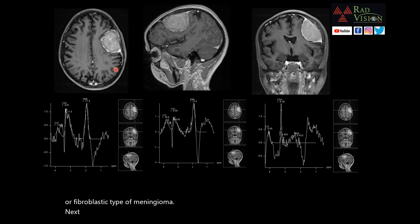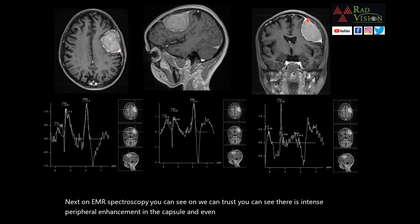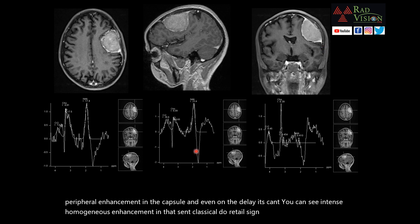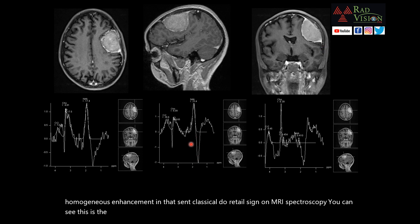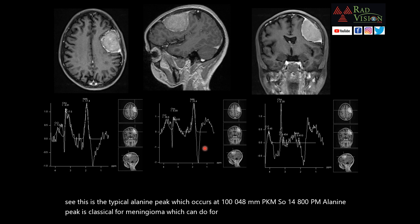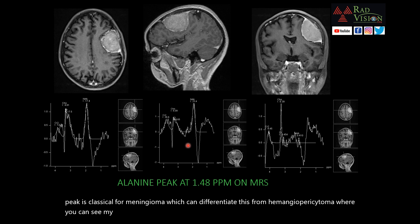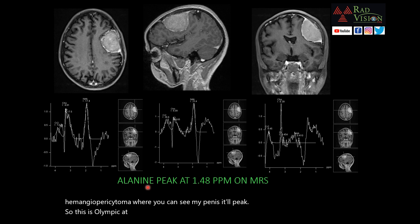On IV contrast, there is intense peripheral enhancement in the capsule, and on delayed scans, intense homogeneous enhancement — a classical dural tail sign. On MR spectroscopy, there is a typical alanine peak at 1.48 ppm, which is classical for meningioma. This differentiates it from hemangiopericytoma, where you see a myo-inositol peak. The 1.48 ppm alanine peak on MR spectroscopy favors meningioma.